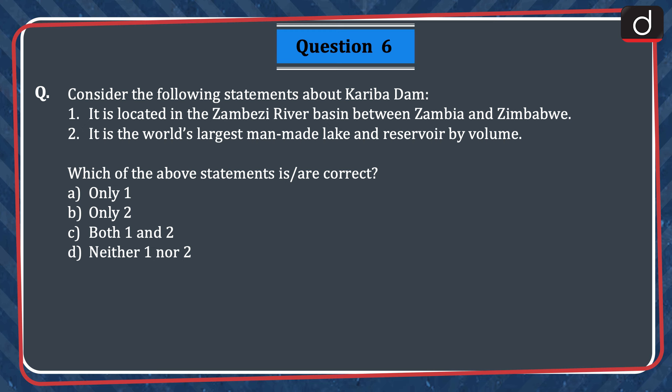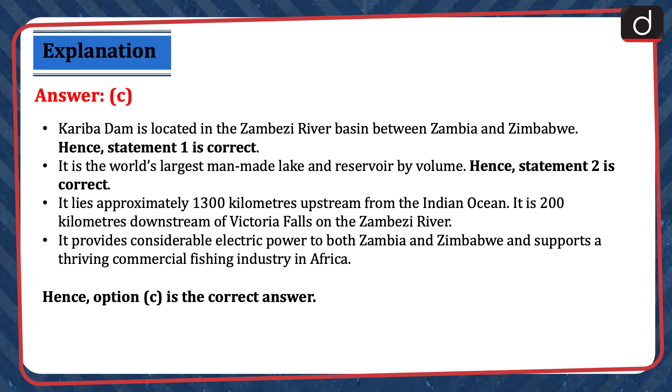Next question: consider the following statements about Kariba Dam. 1. It is located in the Zambezi River Basin between Zambia and Zimbabwe. 2. It is the world's largest man-made lake and reservoir by volume. Which of the above statements is or are correct? Only one, only two, both one and two, or neither one nor two? The correct answer is option C, both one and two. Kariba Dam is located in the Zambezi River Basin between Zambia and Zimbabwe. Hence, statement 1 is correct. It is the world's largest man-made lake and reservoir by volume. Hence, statement 2 is also correct.